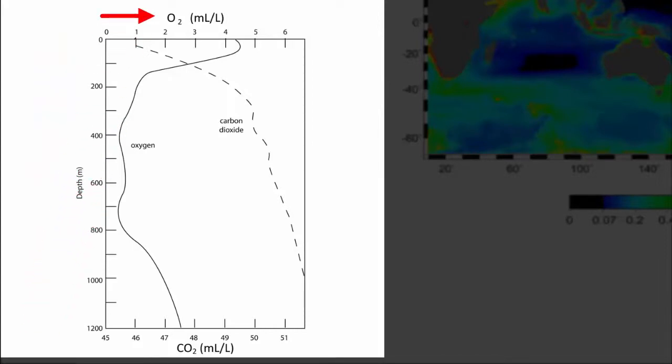The x-axis shows two scales. One on top, which refers to the oxygen graph, solid line, and one on the bottom which refers to the carbon dioxide graph, dashed line.